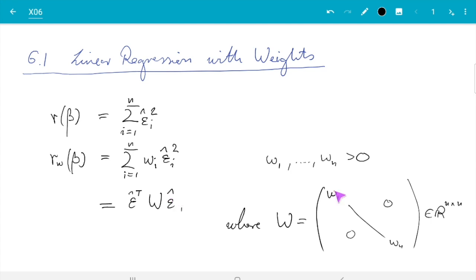All the way down up to wn times ε̂n is the last entry. And if we multiply that from the left with ε̂ transpose, then we get that expression. So that's just clever notation for this sum.